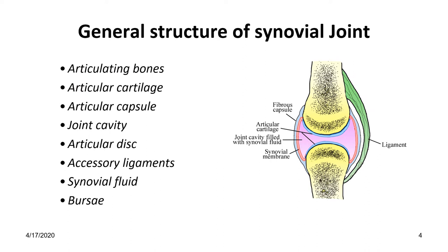The structural components of synovial joints are considered under eight headings: articulating bones, articular cartilage, articular capsule, joint cavity, articular disc, accessory ligaments, synovial fluid, and bursae.